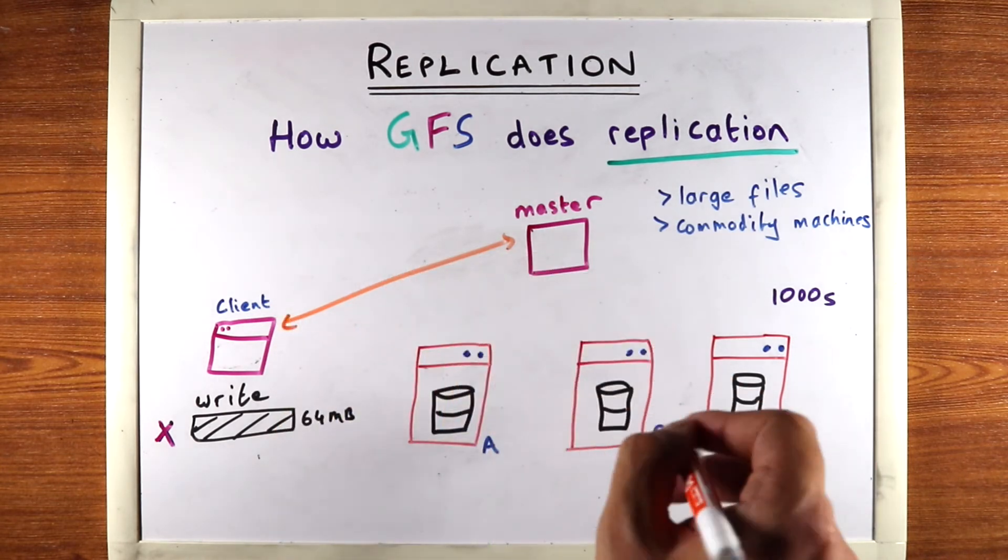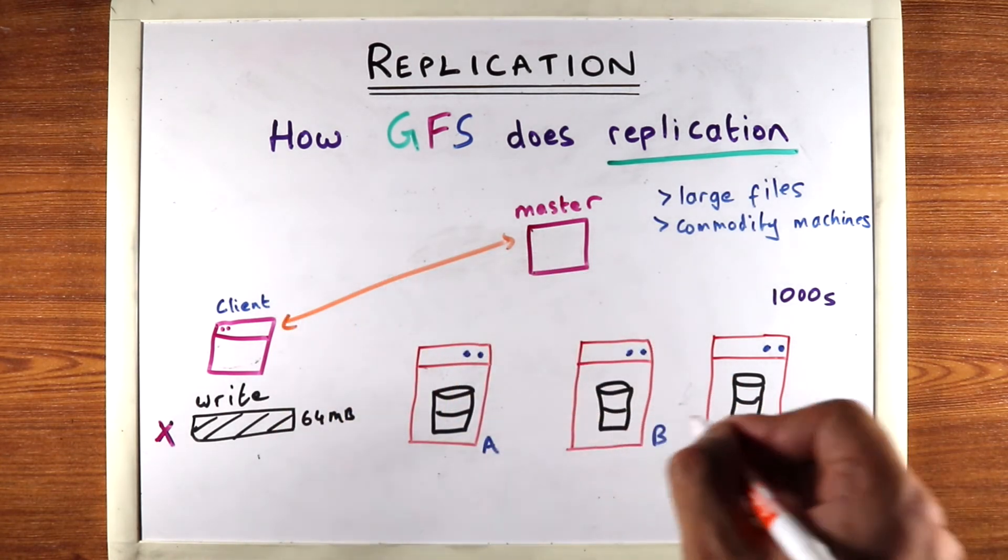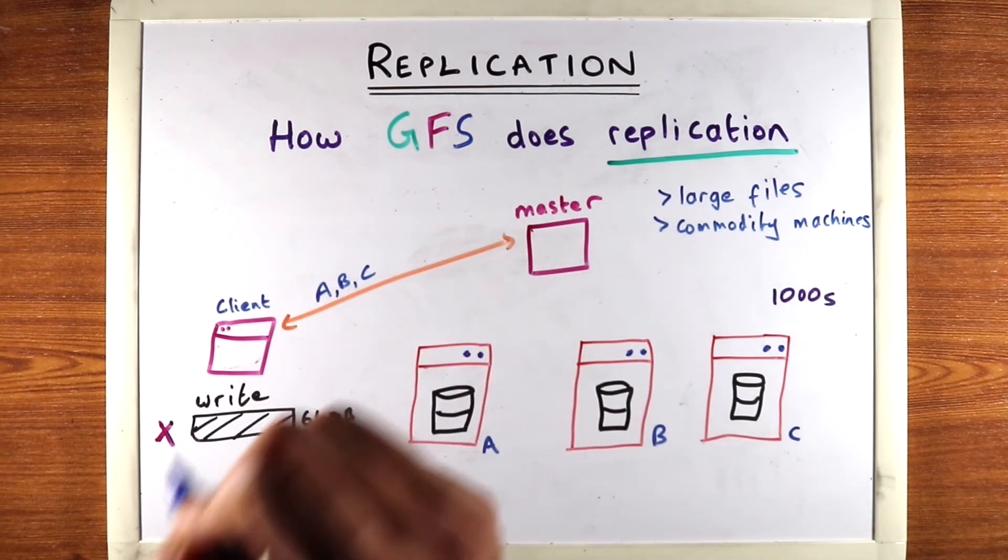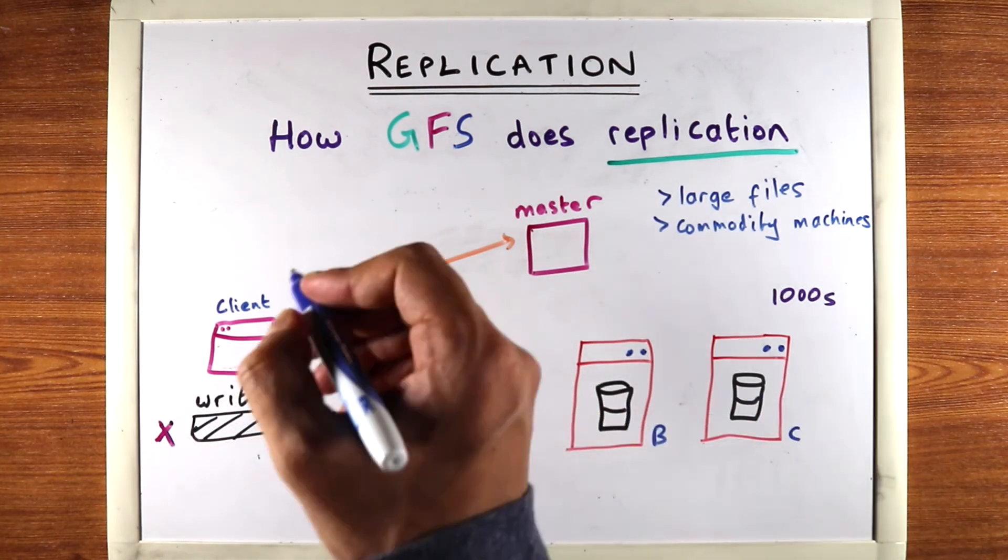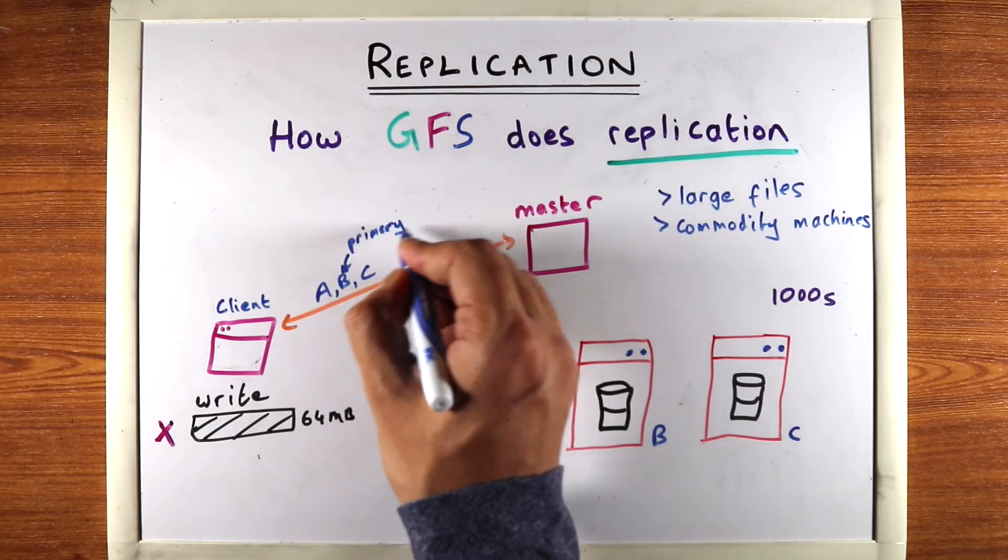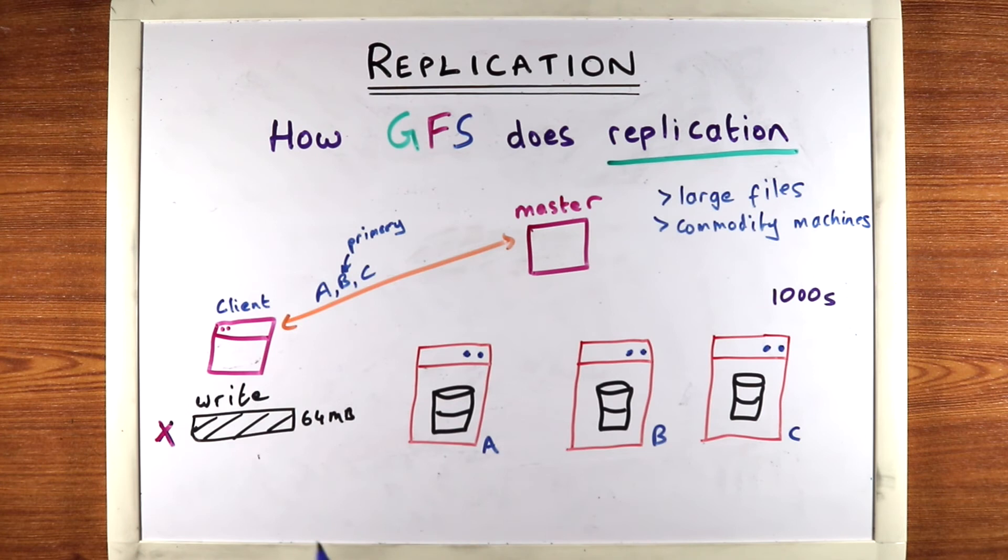The master replies with a list of replicas, a list of machines. And so the master says write to machine A, B, and C. And the master also picks one of these as primary. So the master picks let's say B as the primary. And we'll get into why that's important in a bit. So B is primary and A and C are secondary copies of this data.